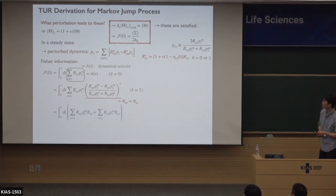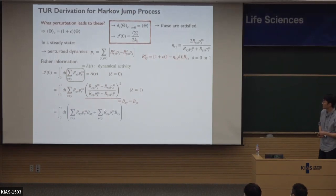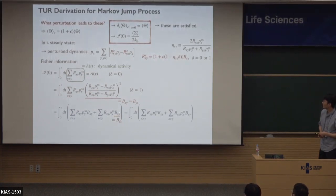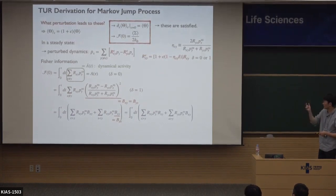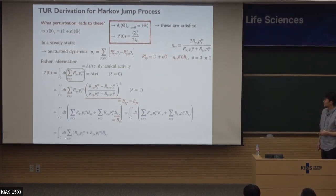By dividing the whole summation into two parts — first where x is larger than y, and second where x is smaller than y — and using the fact that b_xy equals b_yx, we can rearrange. Since x and y are dummy indices, we exchange the second summation indices from xy to yx. The result is that we can add these two summations together.